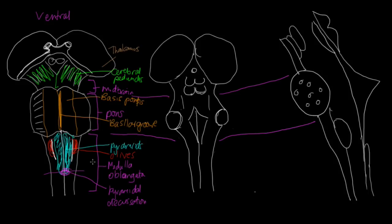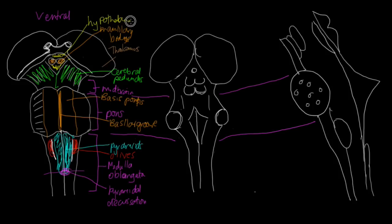There is another feature on the ventral surface: up here we've got structures called the mammillary bodies. Superior to that, just behind it, that's where the hypothalamus is. And then here we've got the optic chiasm.